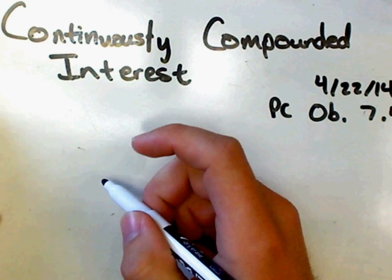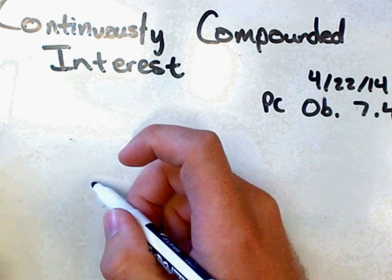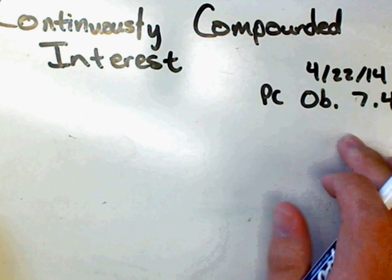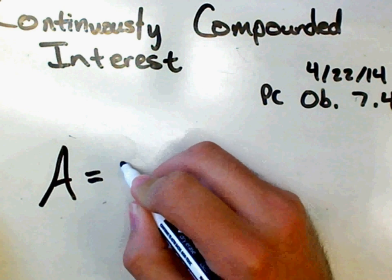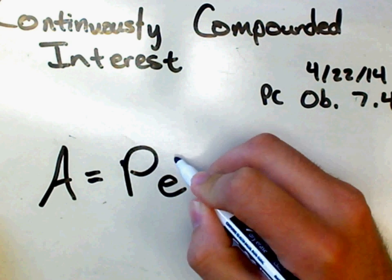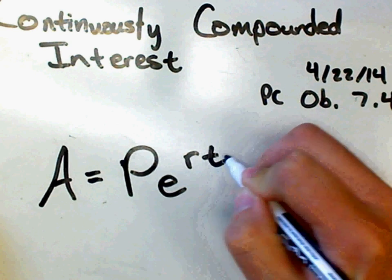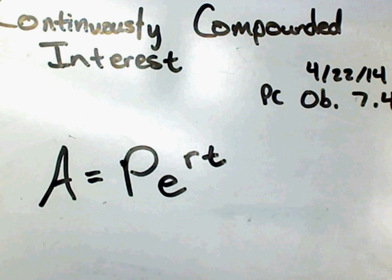So we have a new formula that goes with this. This is Objective 7.4 for pre-calc. So that formula is A equals P times e to the rt power.